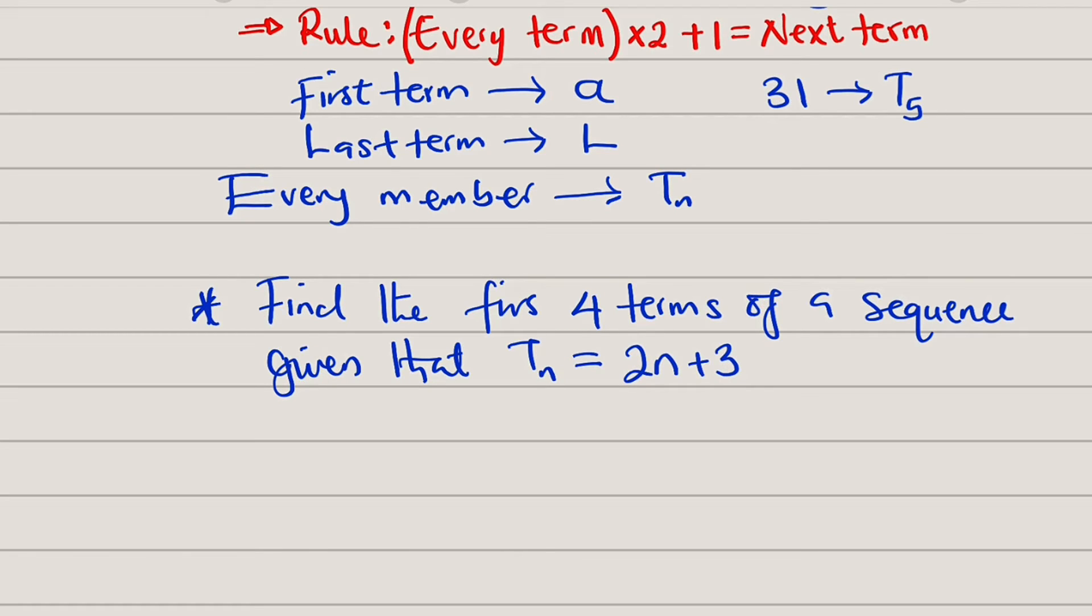Here is a question which says that we should find the first 4 terms of a sequence, given that TN is equal to 2N plus 3. So, all we have to do is to substitute the value of N equal to 1 through 4 to obtain these terms. So, the first term, which is T1, will be equal to where N is equal to 1. We have 2 multiplied by 1 plus 3. And this is equal to, you can see 2 multiplied by 1 is equal to 2. And 2 plus 3 is equal to 5. Therefore, the first member of that sequence is 5.